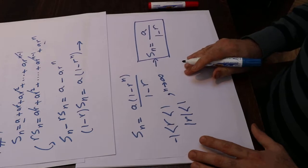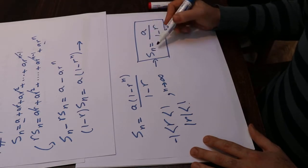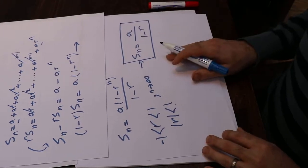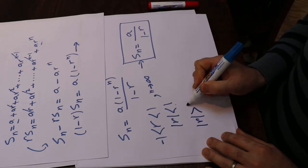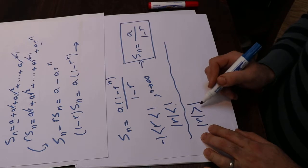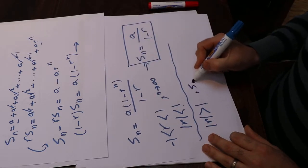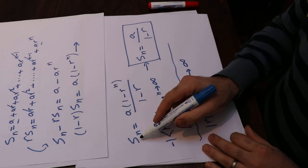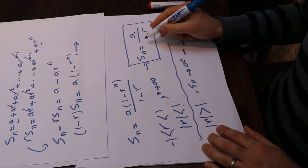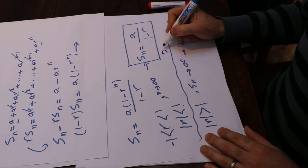So the geometric series equals the first term divided by (1 minus the ratio). The second case is when the absolute value of R is larger than 1. When R is larger than 1, R^N as N goes to infinity will be infinity, therefore SN will go to infinity. In other words, the limit of SN doesn't exist, meaning the series will be divergent. But when N goes to infinity and SN exists and equals A divided by (1 minus R), the series is convergent.